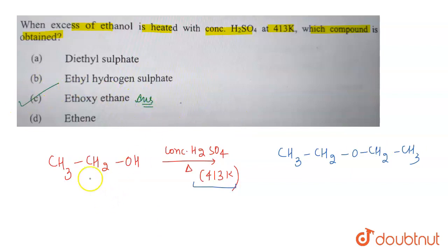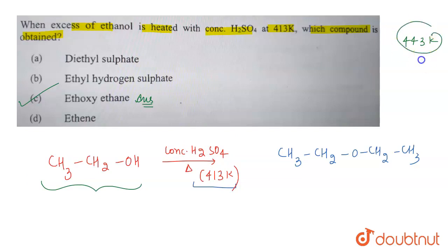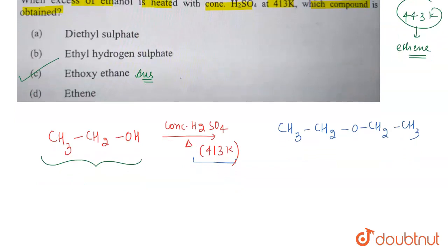However, when this alcohol is treated with concentrated H₂SO₄ at 443 Kelvin — if the temperature is 443 Kelvin — then ethene will be formed; an alkene is formed in this case.